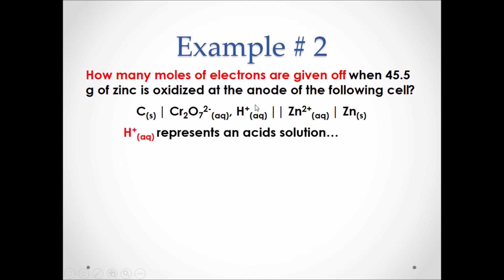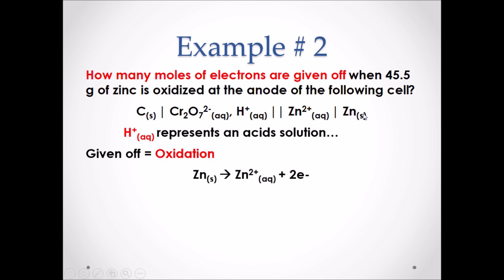Something to first note is that H+ in the cell notation represents that one of the solutions is acidic. We know that zinc is being oxidized at the anode, therefore it's going through oxidation. We can then assume that zinc solid is going to form zinc two plus ions. To balance this half reaction we have to add two electrons to the product side, representing the loss of electrons.